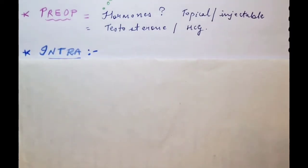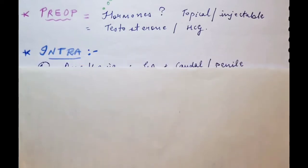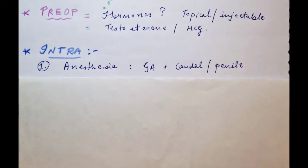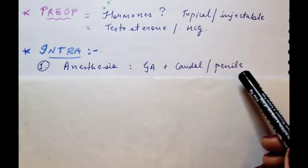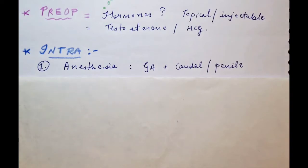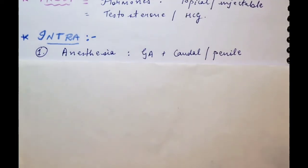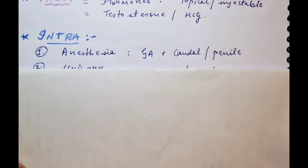Intraoperatively, right before the procedure, you need to consider anesthesia. Since this is done on infants ranging from 6 months to 18 months, general anesthesia is preferred. For pain management, the caudal block is given; some prefer to give a penile block. It is done as an outpatient procedure in many centers, but general anesthesia with a block for pain management is the norm.